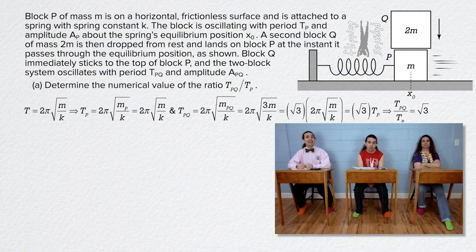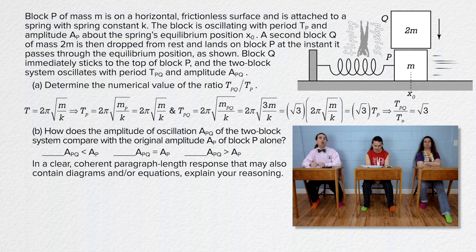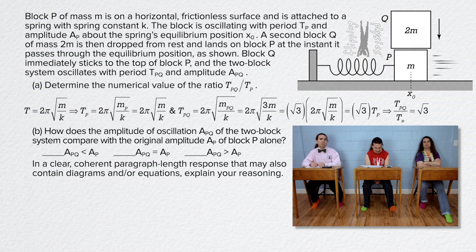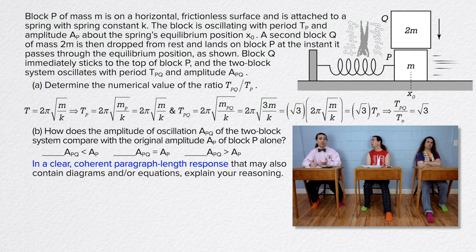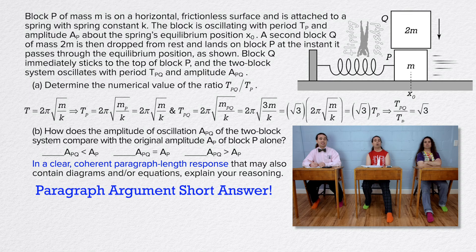Bobby, please read part B. Part B: How does the amplitude of oscillation A sub PQ of the two-block system compare with the original amplitude A sub P of block P alone? The amplitude of blocks PQ is less than the amplitude of block P, the amplitude of blocks PQ equals the amplitude of block P, or the amplitude of blocks PQ is greater than the amplitude of block P. In a clear, coherent paragraph-length response that may also contain diagrams and/or equations, explain your reasoning. This problem says 'in a clear, coherent paragraph-length response' — so this is the paragraph argument short answer question on this exam.